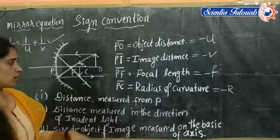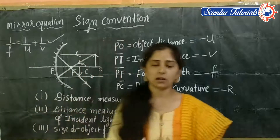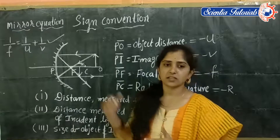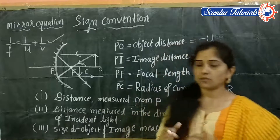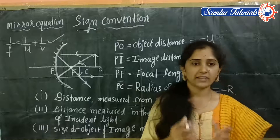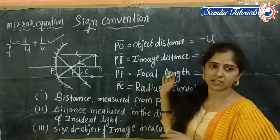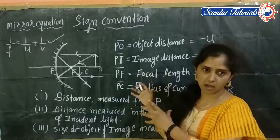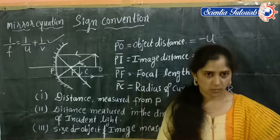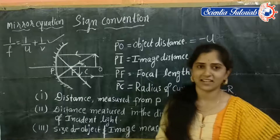When solving numerical problems using the mirror equation, we apply this sign convention. For example, if you need to find the object distance given the focal length and image distance, you assign signs according to the position of the object and the position of the image, then solve the problem using the mirror equation.